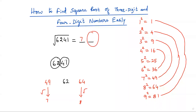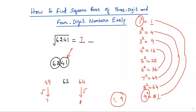To get the second digit, I consider the ones place digit in the second group 41, which is 1. Since 1² and 9² both have 1 at the ones place, the candidates are 1 and 9. Multiplying the square roots of the surrounding perfect squares: 7 × 8 = 56. This product 56 is less than the first-group number 62, so we choose the larger candidate: 9. Therefore √6241 = 79.